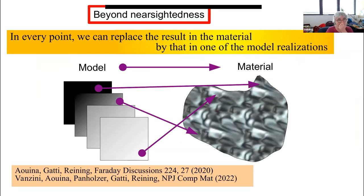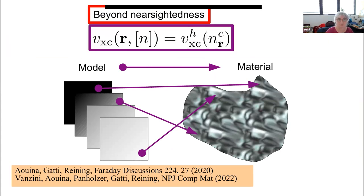So how do we do this? We keep the idea that at every point in the real material — and by point we generalize to mean a point in real space, reciprocal space, or frequency space — we can replace the result of the unknown quantity, whether a potential or an observable, by the result of a suitably tuned model. So this doesn't have to be the model that has the same density value as that point, but the model and the real material must be linked somehow. For example, in the DFT application, the exchange-correlation potential, which in the LDA is given by the potential of the homogeneous electron gas at the same density as point r, will now be given by the homogeneous electron gas at a density which sort of depends on point r but is not the density at r — it's some density we have to find.